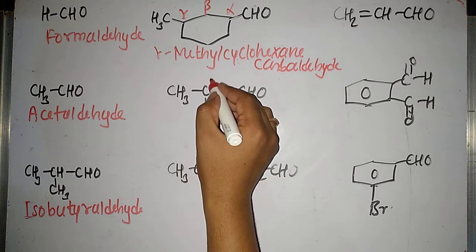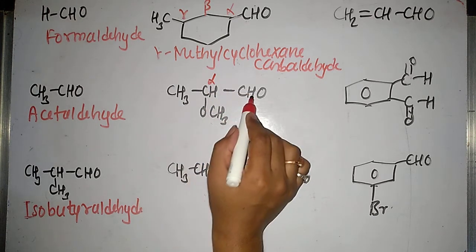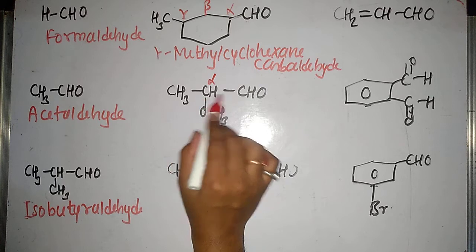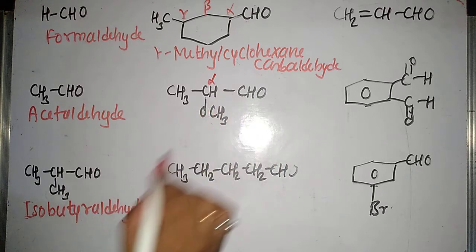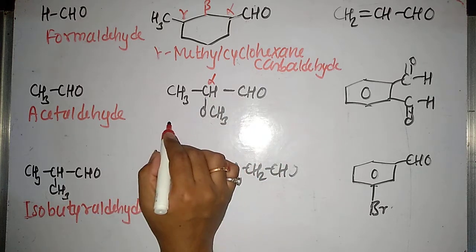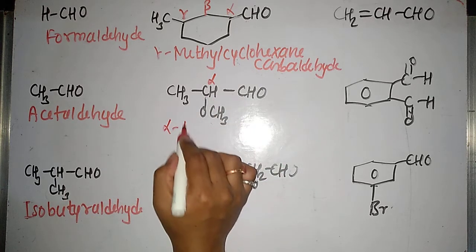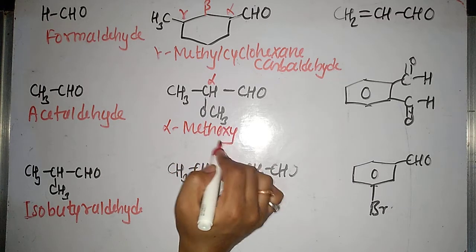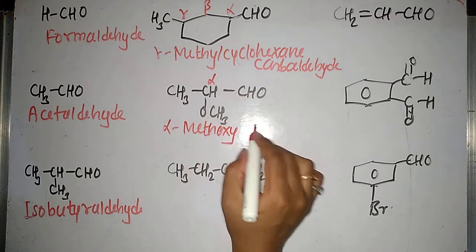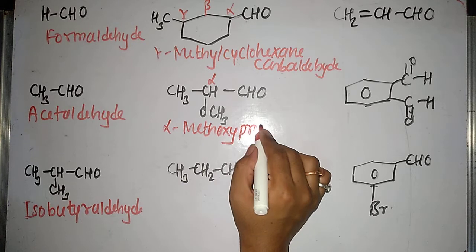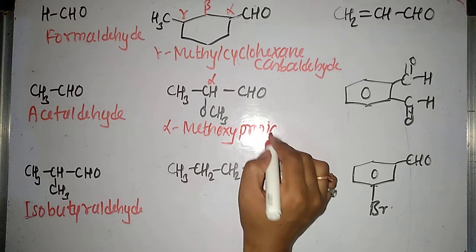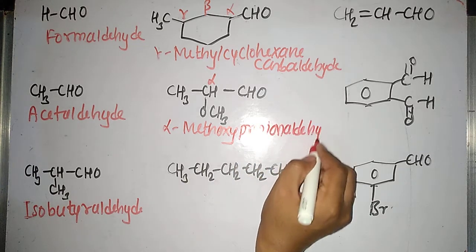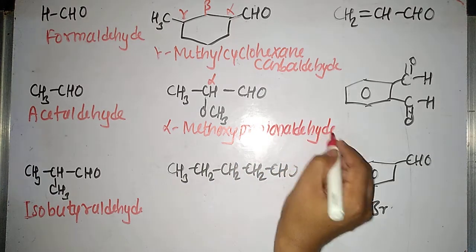At the alpha position we have a methoxy group. The carbon atom next to the functional group carbon is called alpha. At alpha I am having methoxy, so I will call it alpha-methoxy. There are a total of three carbon atoms, so it will be propionaldehyde. The name will become alpha-methoxypropionaldehyde.